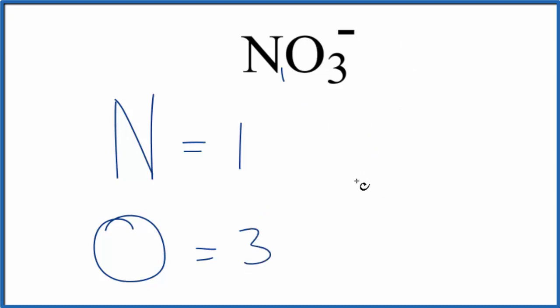So for the nitrate ion NO3- we have a total of four atoms. This negative sign up here, this is an electron. It means that it's an ion.